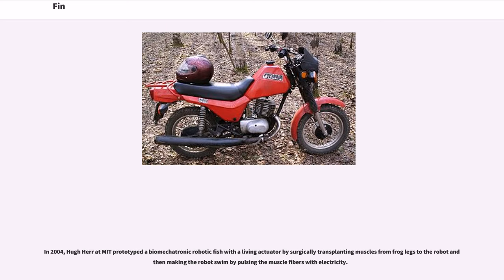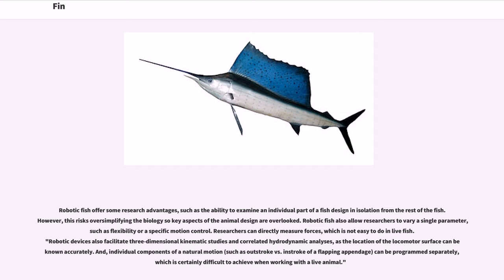In 2004, Hugh Herr prototyped a biomechatronic robotic fish with a living actuator by surgically transplanting muscles from frog legs to the robot and then making the robot swim by pulsing the muscle fibers with electricity. Robotic fish offer research advantages such as the ability to examine an individual part of a fish design in isolation. However, this risks oversimplifying the biology so key aspects of the animal design are overlooked. Robotic fish allow researchers to vary a single parameter, such as flexibility or a specific motion control, and directly measure forces — which is not easy to do in live fish. Robotic devices also facilitate three-dimensional kinematic studies and correlated hydrodynamic analysis, as the location of the locomotor surface can be known accurately. Individual components of a natural motion, such as outstroke vs. in-stroke of a flapping appendage, can be programmed separately — which is difficult to achieve when working with a live animal.